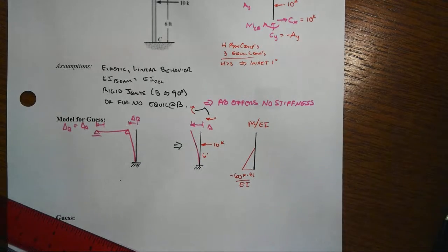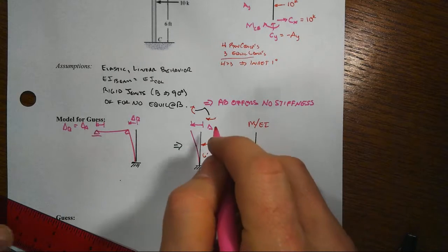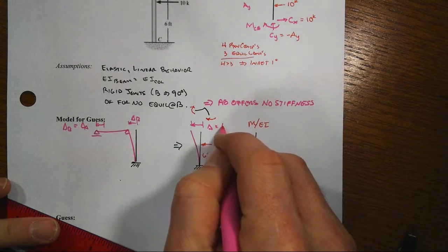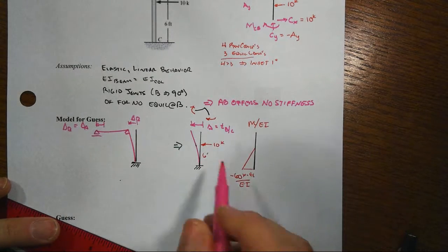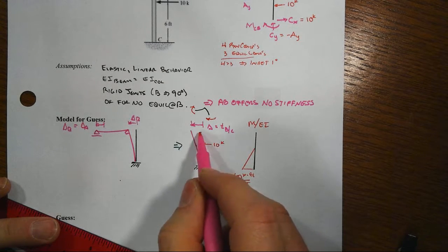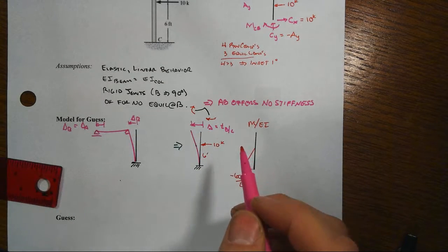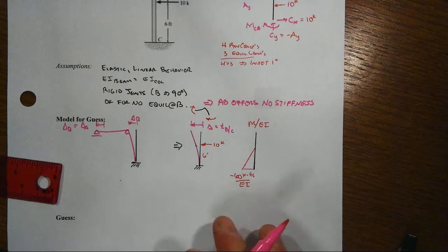Sorry, there we go. And now when we come back and we want to estimate what our delta is, that's just going to be the tangential deviation of B with respect to C, because of the tangent being right on the undisplaced position.